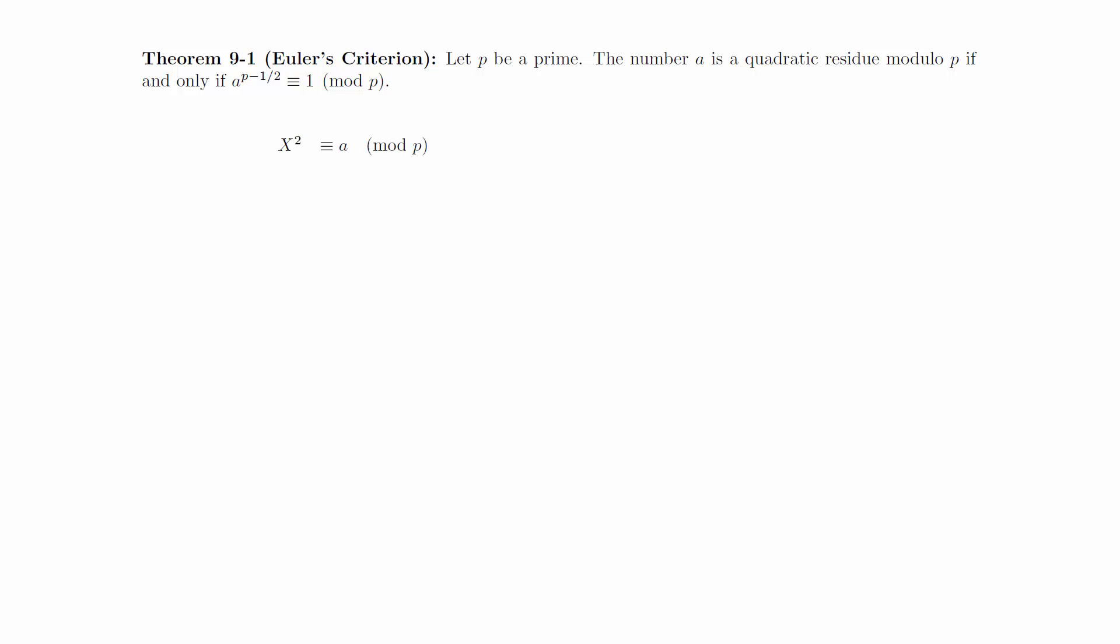Suppose that a is a quadratic residue modulo p. Then there exists an x such that x squared is congruent to a mod p. Since p does not divide a, we know that p does not divide x. Therefore, by Euler's theorem, we know that x to the p minus 1 is congruent to 1 modulo p. By substituting, we get that a to the (p minus 1)/2 is congruent to 1 modulo p.